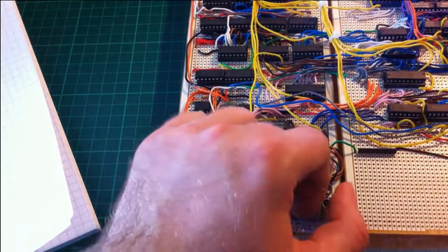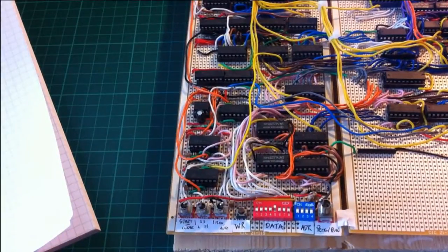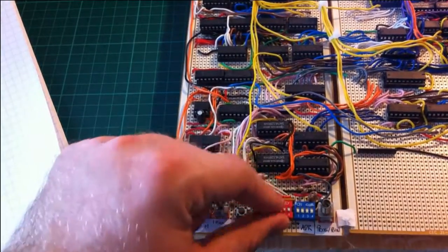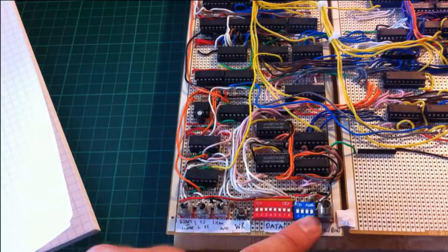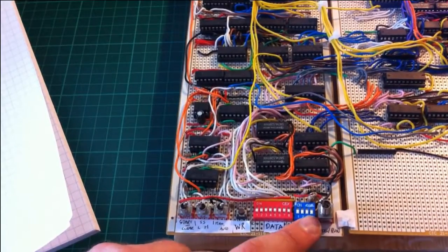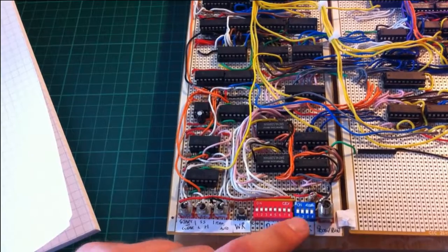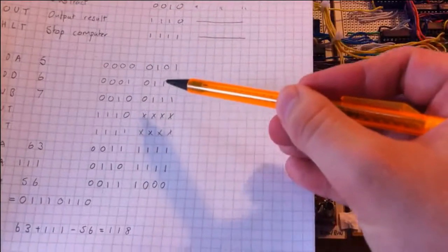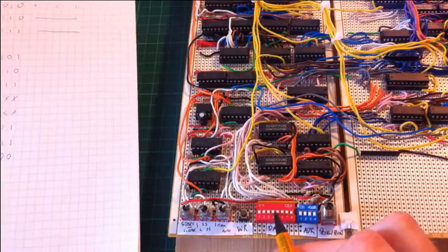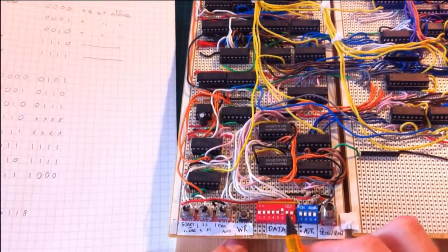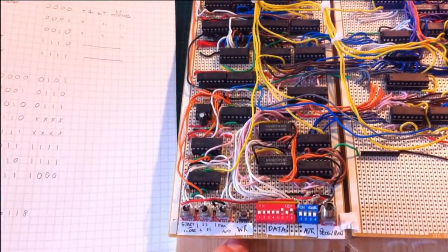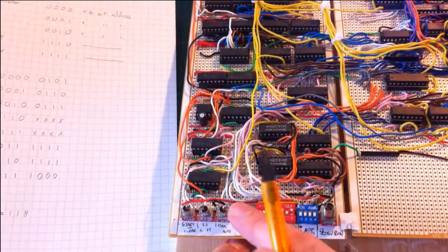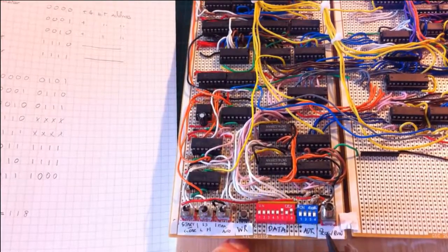So first of all we have to turn it to program mode. We look at the address that we're entering, which in this case is 0 for the first command. And we want to enter the opcode 00000101. So we have 00000101, and then we press the right button to write that to memory.